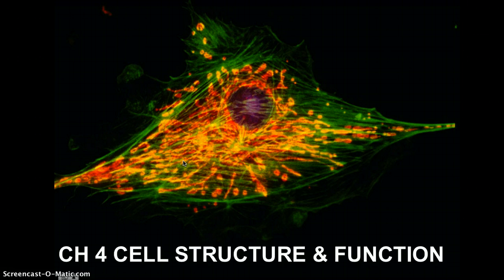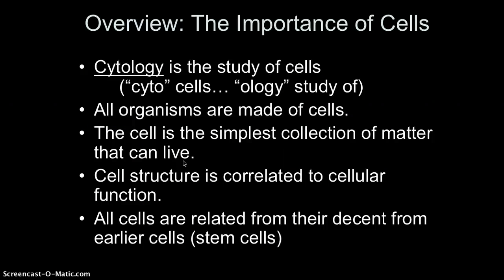This is a pretty fascinating chapter. The topic of cell biology really took off with the discovery of the microscope, especially those more advanced microscopes which we'll look at as we begin this chapter. Cytology is the study of cells — 'cyto' is the prefix meaning cells, and 'logy' means the study of. The human body has about 100 trillion cells altogether. All organisms are made up of cells, and the cell is the simplest collection of matter that can live. Cell structure is correlated to cellular function.